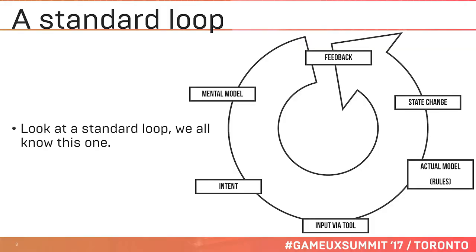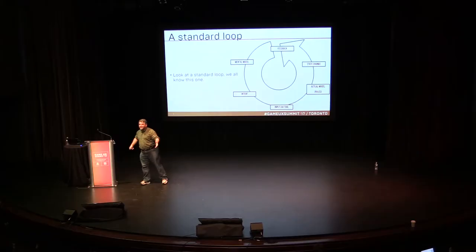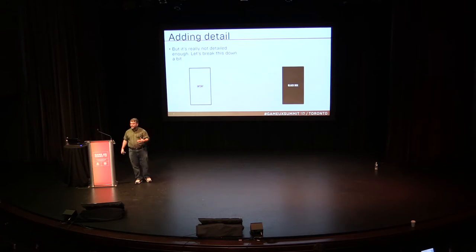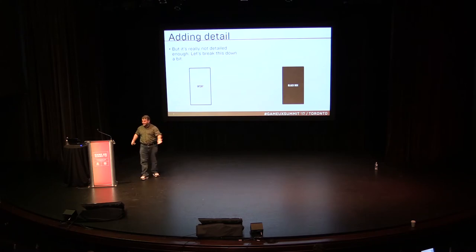There's something on the screen — or on the table, the dash, whatever — that looks like a tool for accomplishing that intent. So they push it, pull it, twist it, pick it up, break it, or whatever. Something happens inside the guts of the machine, something changes, and they probably don't quite know what. Then they get a response back, and from that they update their mental model. That's basic HCI, basic interactivity, basic design — very Don Norman. But especially with video games, it's not detailed enough.